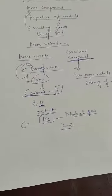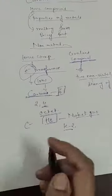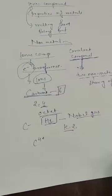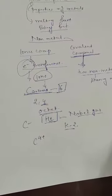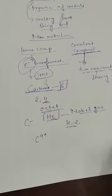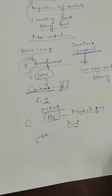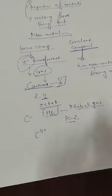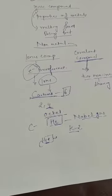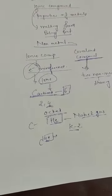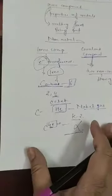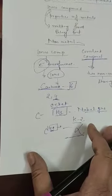If carbon loses 4 electrons, it would have a C4+ charge. But forming a 4+ charge requires a very high amount of energy, and this is not possible or is a very difficult task.